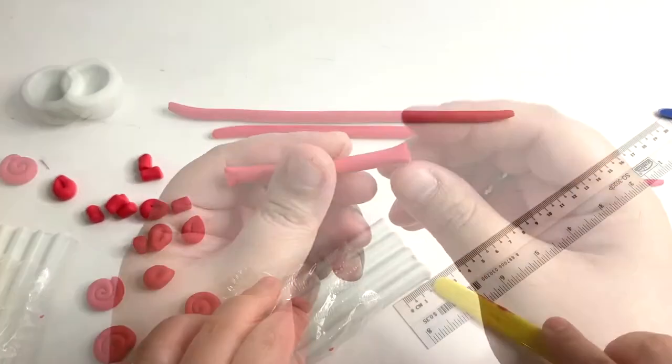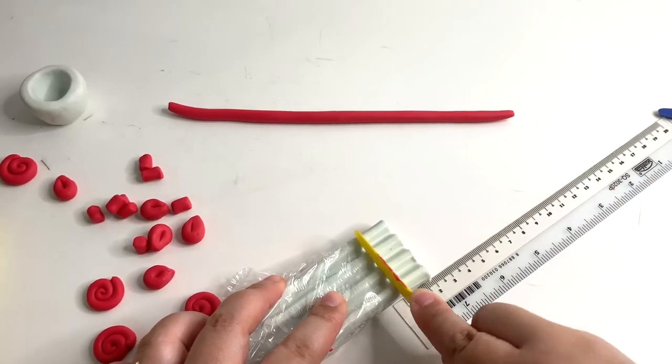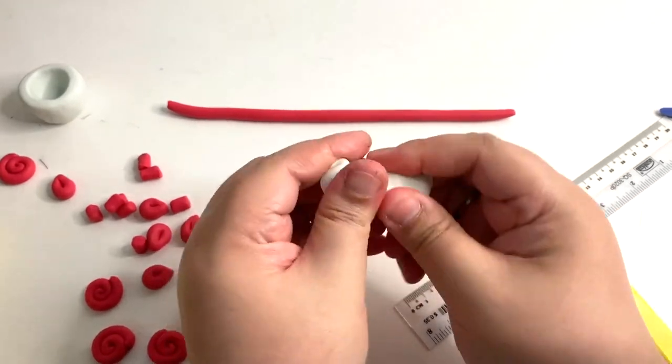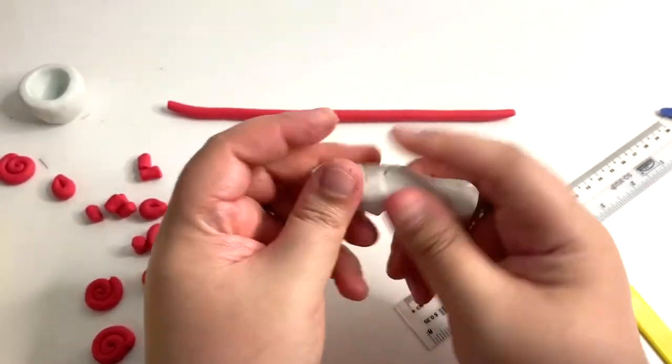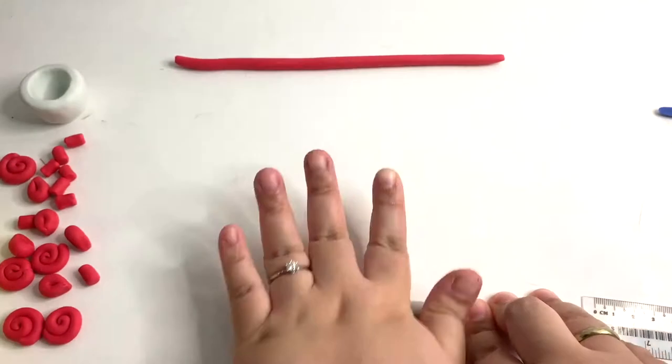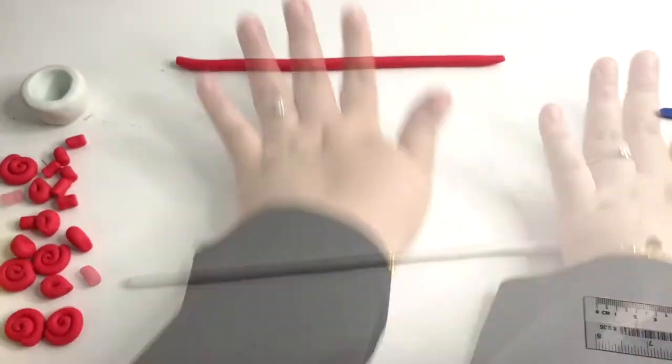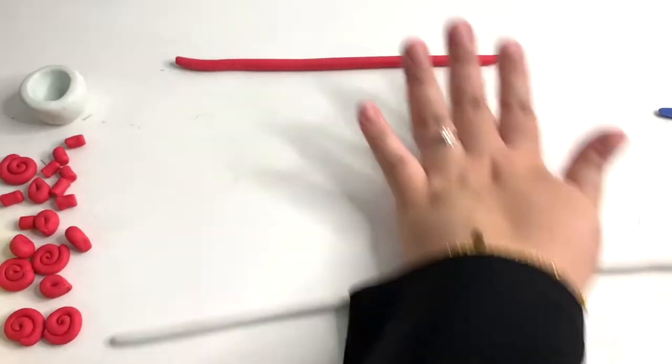Next, we are going to do another 4 coils with any color of your choice. Just like before, cut 1.5cm each piece. Shape it into a mini sausage shape and use your palm to roll the piece. It should be slightly thinner than the previous coils we made. Once all are done, let's use all these to assemble our pot.